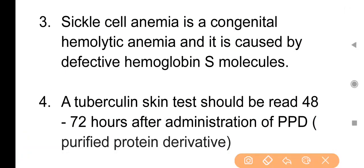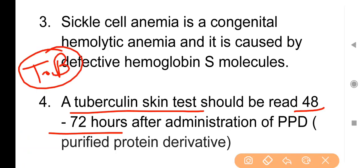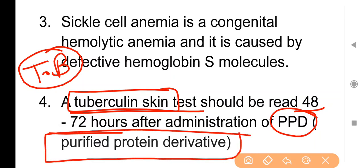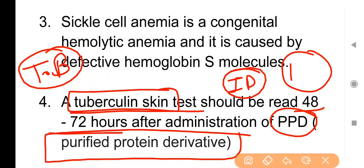Point No. 4: A tuberculin skin test should be read after 48 to 72 hours of administration of PPD. किसी person में TB है या नहीं, इसे identify करने के लिए tuberculin skin test किया जाता है। इसे Von Pirquet ने discover किया था। इस test में patient में PPD यानी purified protein derivative को intradermal route से inject करते हैं। 48 से 72 hours बाद read किया जाता है — अगर 10 mm का rash/चप्पता बन जाए, तो person में TB है।